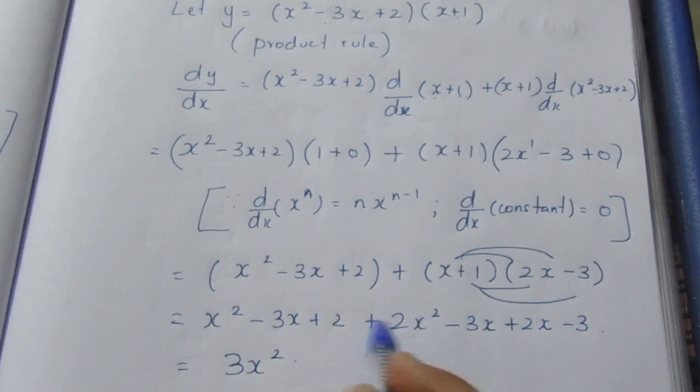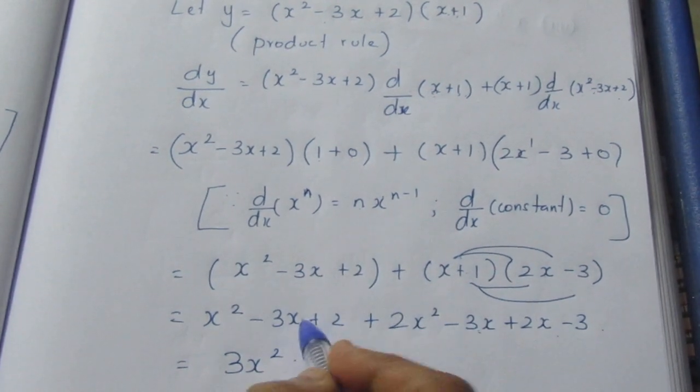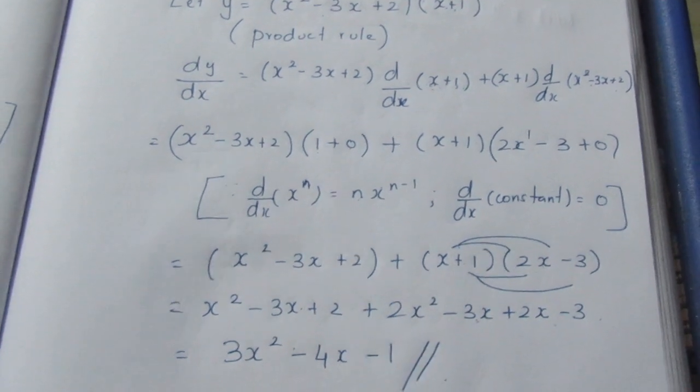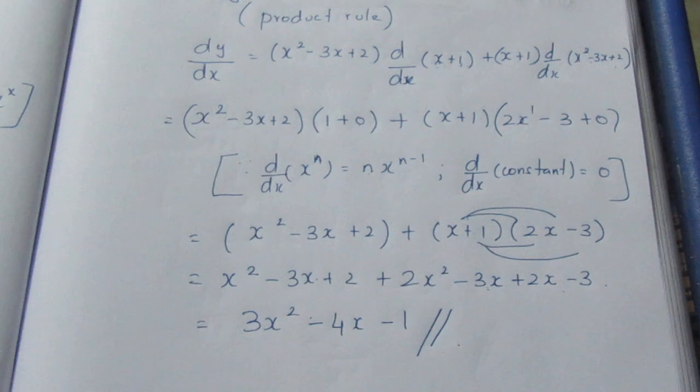Combining like terms gives 3x² - 4x - 1. So the final differentiated answer is 3x² - 4x - 1.